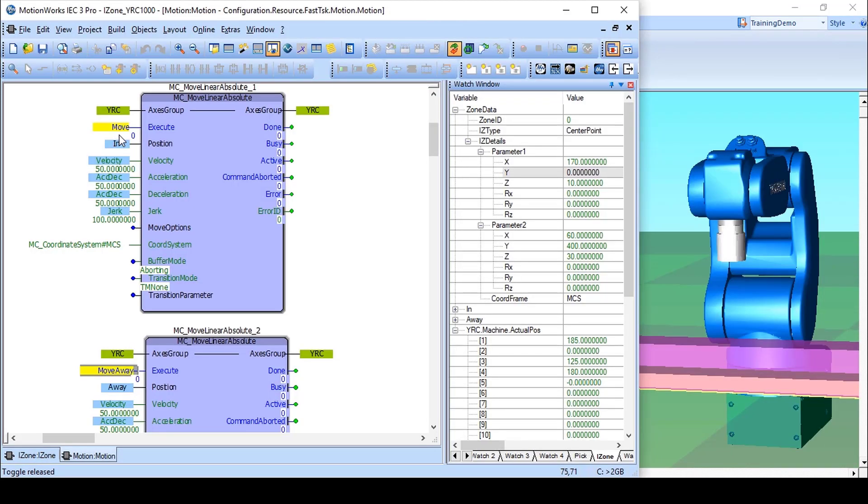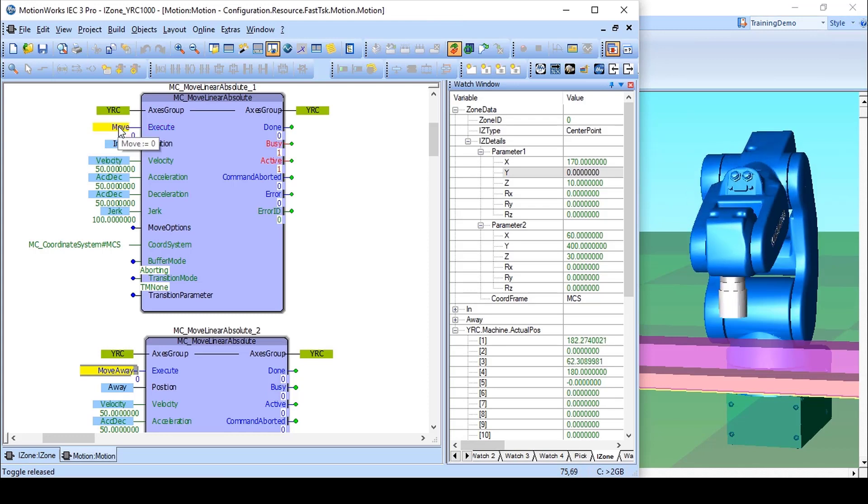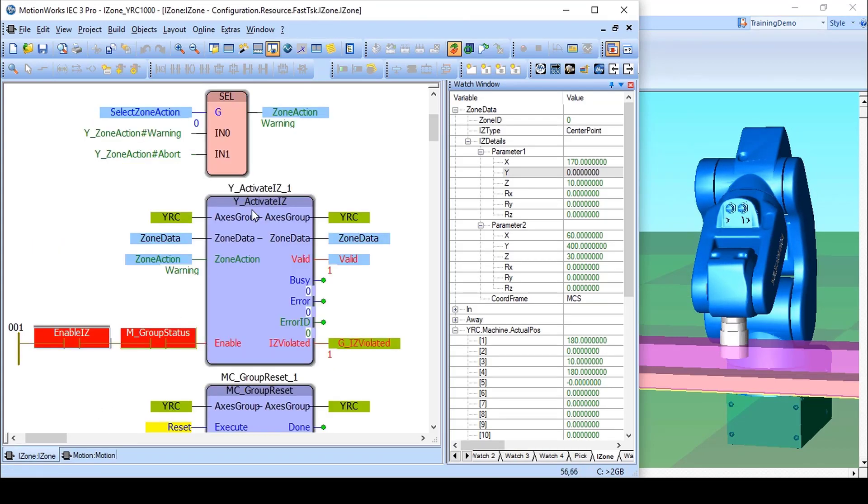I'll execute a move to enter the interference zone. The block Y_ActivateIZ indicates that the interference zone is violated, but the motion continued because the zone action is set to warning.